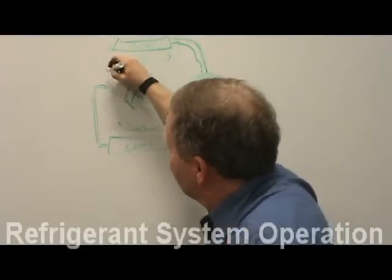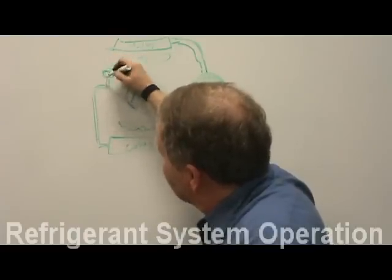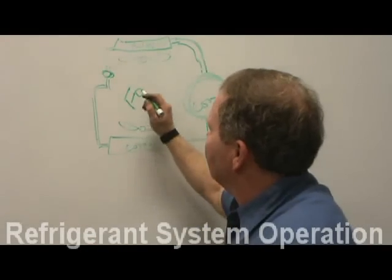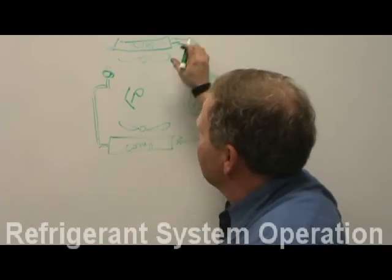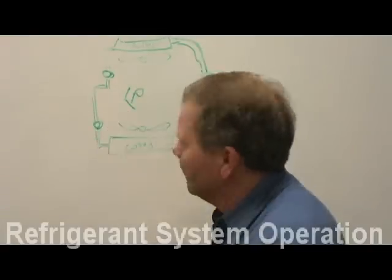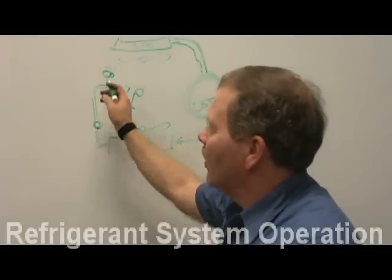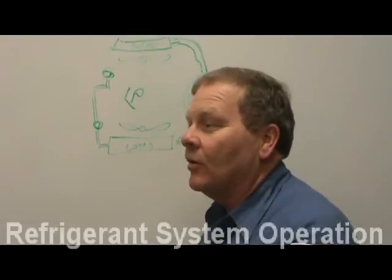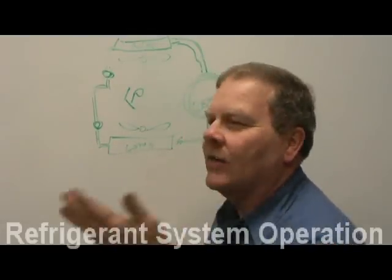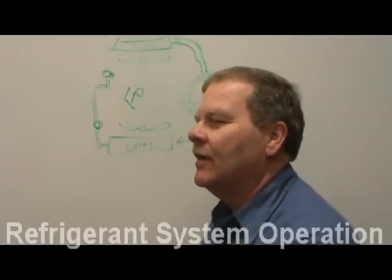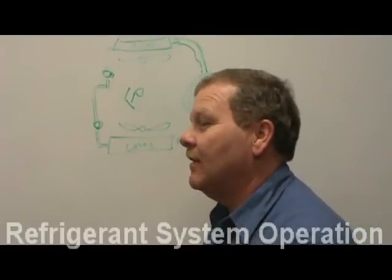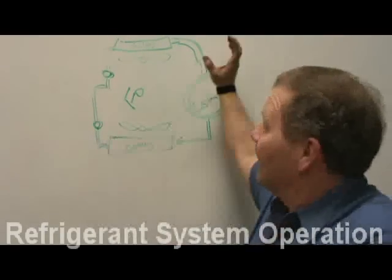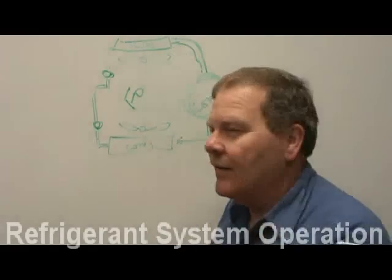With an expansion valve system you don't have a fixed orifice — it's a changing orifice based on temperature. The difference is you don't have an accumulator; instead you've got a dryer on the high side. The ones with an expansion valve have a receiver dryer in the liquid line. I've talked to mechanics who work on AC every day and they never noticed that: expansion valve equals receiver dryer over here; fixed orifice equals big accumulator over here.